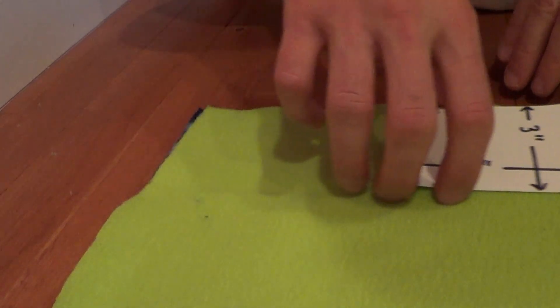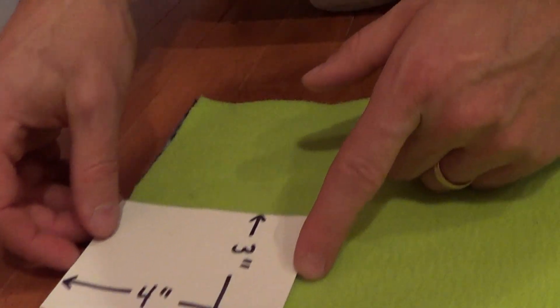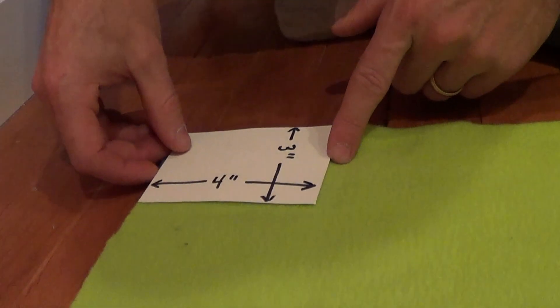So this edge we're going to make shorter because it will eventually stretch to four. This edge we're going to leave at four because it doesn't stretch so it'll stay at four.